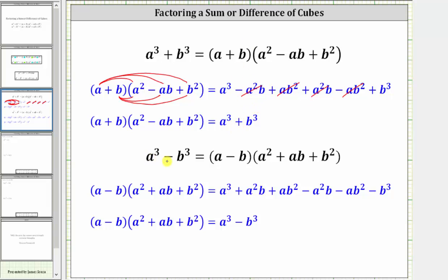Now I'll check the formula for a cubed minus b cubed by determining the product on the right. Again, we have six products. We distribute a, which gives us three products, and then we distribute negative b, which gives us three more products. Distributing a, we have a cubed, plus a squared b, plus ab squared.